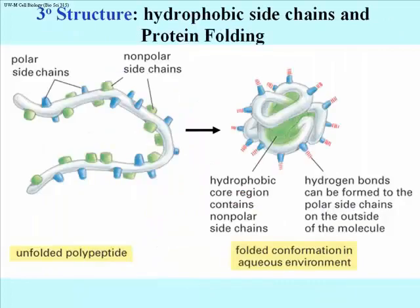What causes proteins to fold into their three-dimensional or tertiary structure? Largely it's interactions between the side chains of the amino acids, which can be quite distant. Unlike secondary structure, which is the result of nearby amino acid interactions, three-dimensional structure can be the result of interactions of side chains of amino acids that are quite distant from one another.